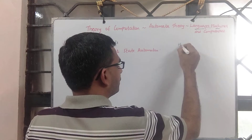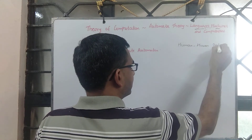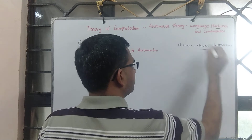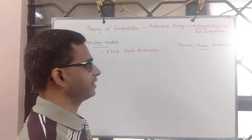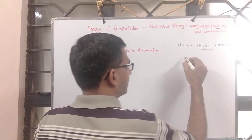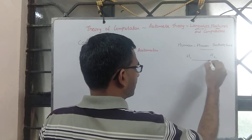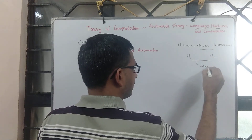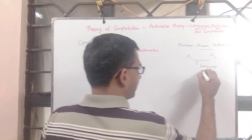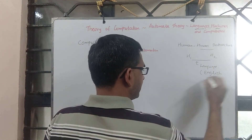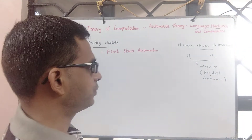Look at human-human interaction. When there is an interaction between two human beings, it could be between two Indians or between an Indian and a Chinese. Naturally when you establish a communication between two human beings, you need a medium for communication — that's precisely our language. It's natural language. It could be English, German, Japanese, or any language depending upon what these two are comfortable with.